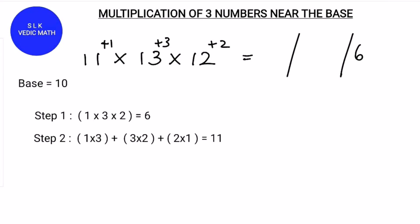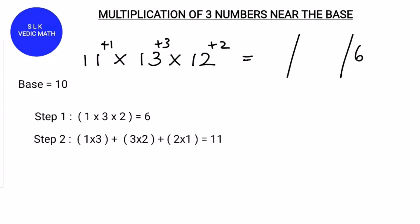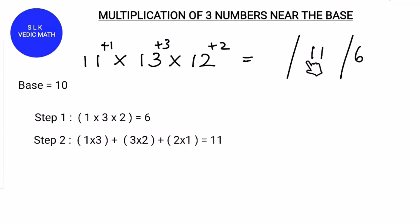Now for step 2, multiply 1 × 3 plus 3 × 2 plus 2 × 1. 1 × 3 is 3, and 3 × 2 is 6, so 3 plus 6 is 9. And 2 × 1 is 2, and 9 plus 2 is 11. So write 11 in the middle part.